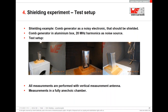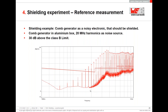Here in my lab, I created a small experiment. I placed a comb generator inside a shielded box — think of this comb generator as our noisy electronic that we want to shield. We have a vertical antenna on the comb generator and are measuring with a log-periodic antenna in vertical polarization. Measurements are performed in my anechoic chamber. The results show the box opened with the electronics active: we have 20 MHz harmonics starting at 30 MHz, then 40, 60, 80, 100, 120 MHz. The electronic seems quite noisy and we are 30 dB above the limit. Our conclusion: we want to shield this to reduce radiated emissions.